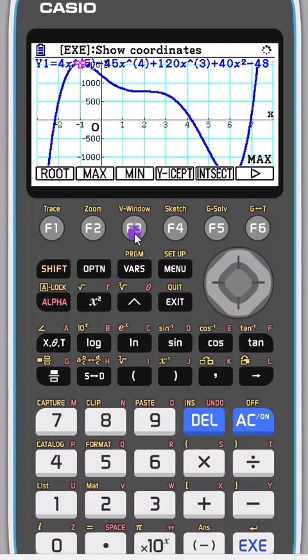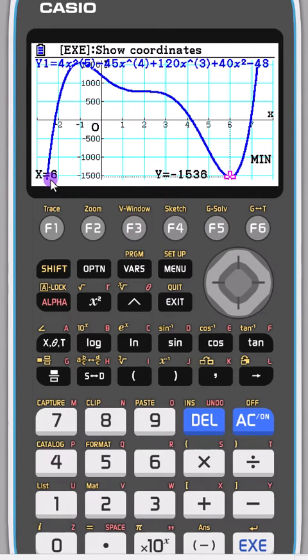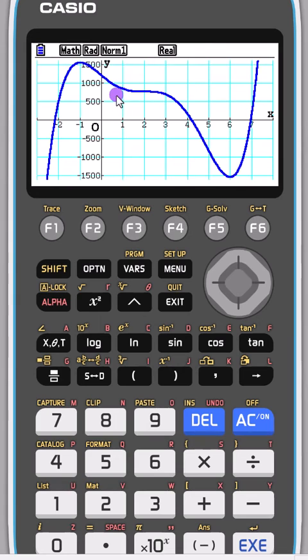Press graph solve again and we can find our minimum value, and that's where x equals 6 and y equals minus 536. That's the maximum and minimum, but unfortunately that does not allow us to find this stationary point of inflection.